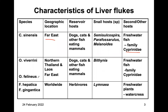Opisthorchis vivarini and felineus are usually found in Northern Thailand, Laos, and the Far East. Dogs, cats, and other fish-eating mammals are the reservoir host. The snail is Bithynia, and the second host is freshwater fish, Cyprinidae. Fasciola hepatica and Fasciola gigantica are found worldwide. The reservoir host is herbivores, the snails are Lymnaea, and the second host is freshwater plants like watercress.